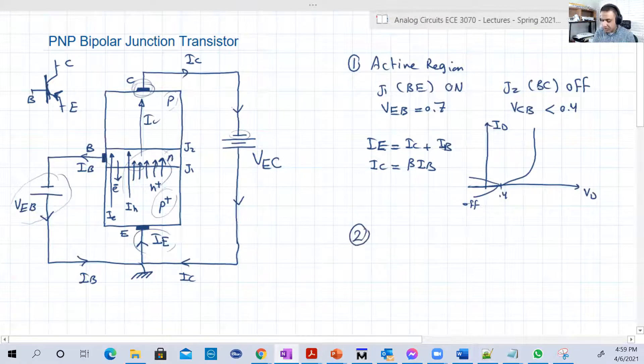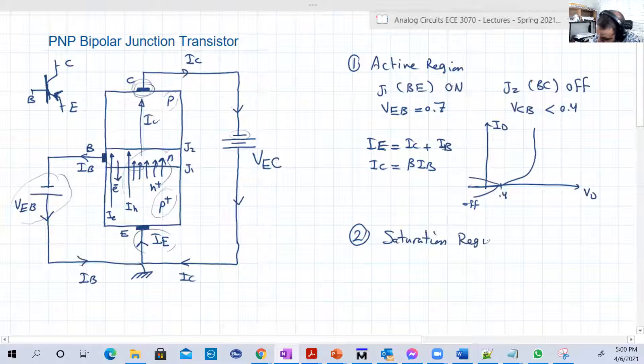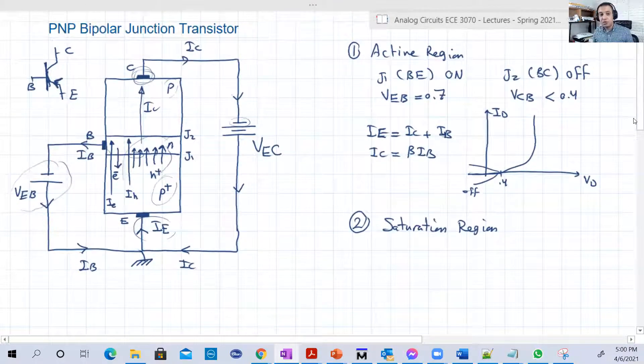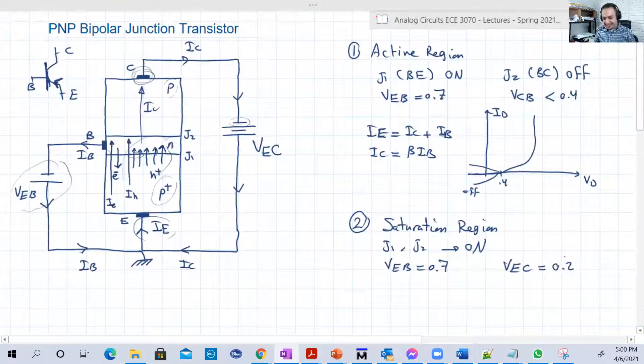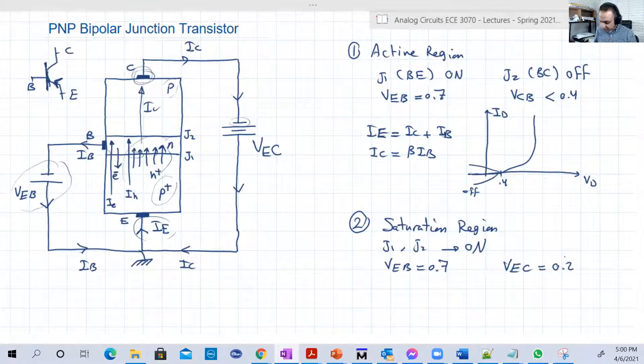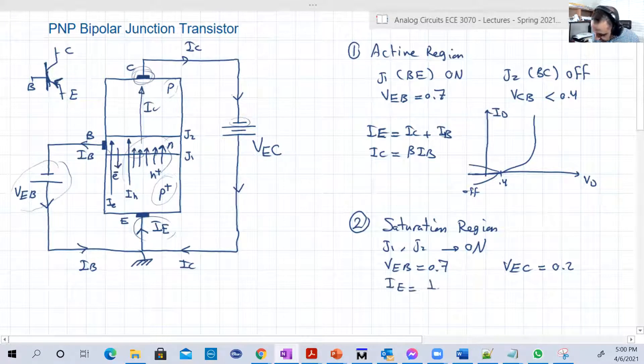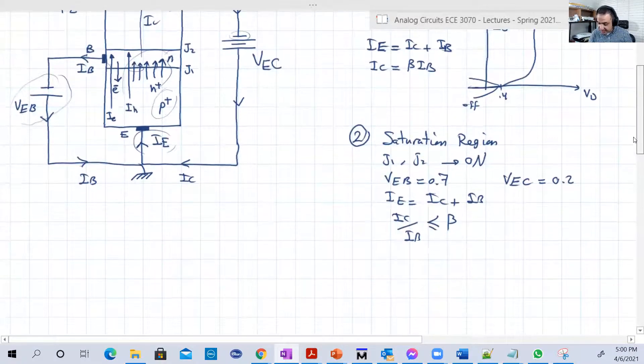And for saturation now, I think we can conclude or derive the same equations, but just look at the flipping of the voltages. So in the saturation region, we will have something similar, exactly similar to the NPN transistor. So basically J1 and J2 both will become on. VEB will be still 0.7, and VEC now will become 0.2. So it was VCE before, now it's VEC 0.2. Still IE equals IC plus IB, but now IC over IB is less than or equal to beta.